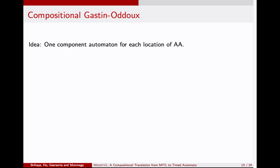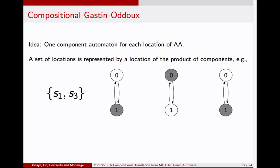The idea of this work is to construct one component automaton for each location of the alternating automaton. This means that for each timed subformula, we construct a small component automaton. The idea is like this: suppose you have three locations, S1, S2, S3 in your alternating automaton, and you are looking at a configuration consisting of S1 and S3. Then it can be represented by this configuration of your components. In this one, the token is here. In this one, the token is here. This placement of tokens in your components corresponds to a location in your product automaton of these components.